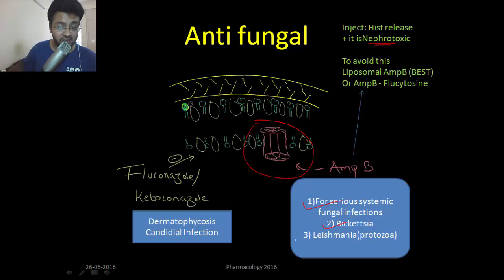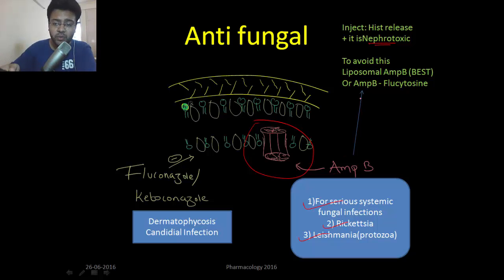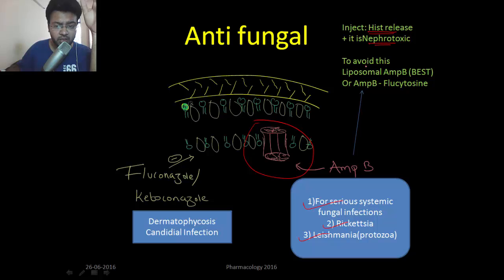Amphotericin B can also be used in rickettsial and some protozoal infections like leishmaniasis. The problem with Amphotericin B is that when you inject it, it causes histamine release from mast cells, producing an allergic reaction. To avoid this, either infuse Amphotericin B slowly or use liposomal Amphotericin B.